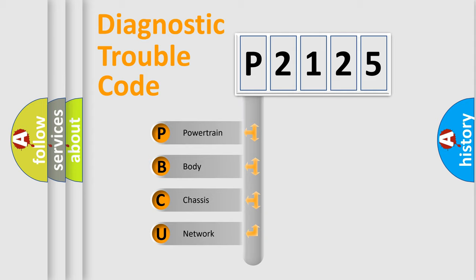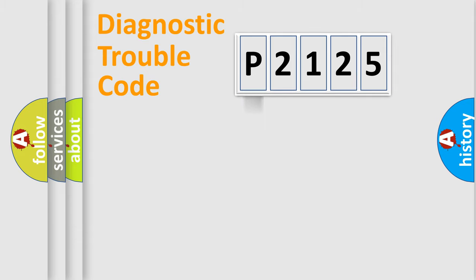We divide the electric system of automobile into four basic units: Powertrain, Body, Chassis, and Network. This distribution is defined in the first character code.